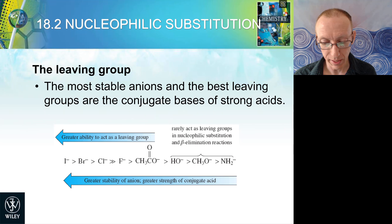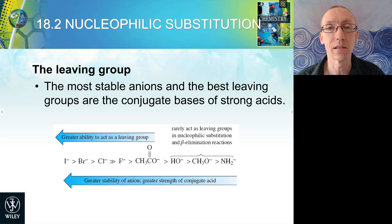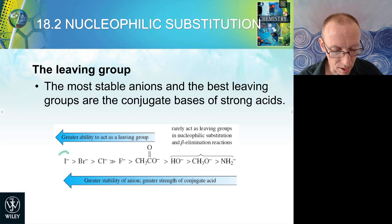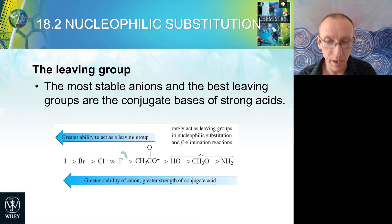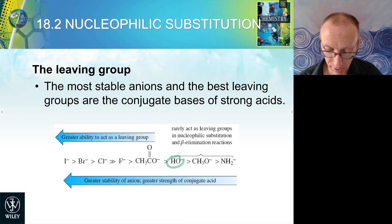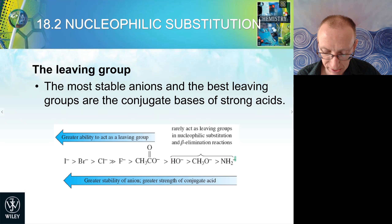The leaving group also has a role to play in nucleophilic substitution reactions. The most stable anions and the best leaving groups are the conjugate bases of strong acids. I⁻ is a very stable anion with a large nuclear charge and is very polarizable. Bromide is also a very good leaving group. Chloride is not as good. Fluoride is actually a very poor leaving group. Carboxylate anions and hydroxide are moderate, and then the really poor leaving groups include alkoxides and the amide anion, which is a terrible leaving group — a very unstable anion.